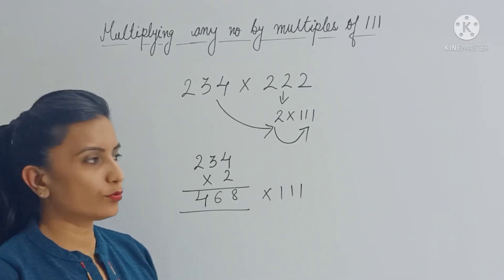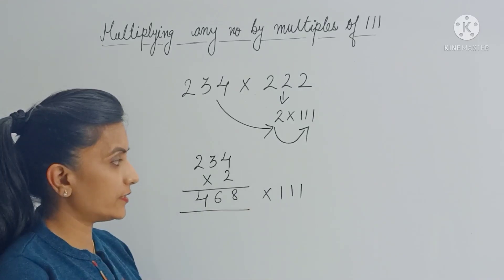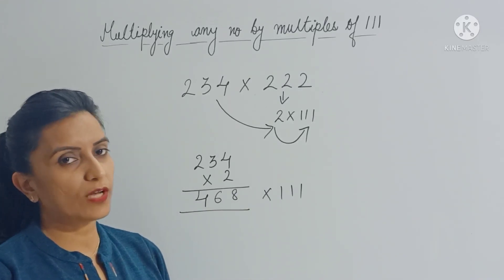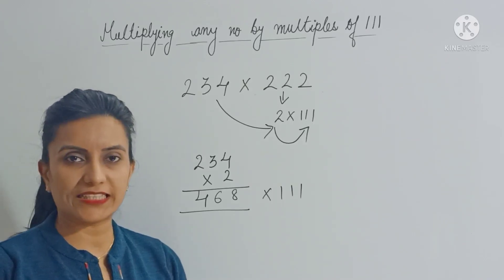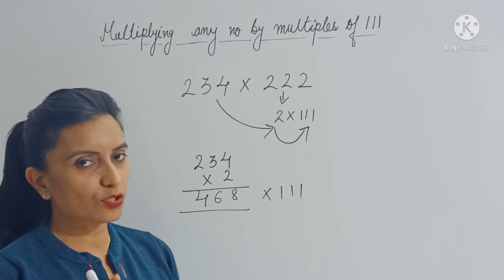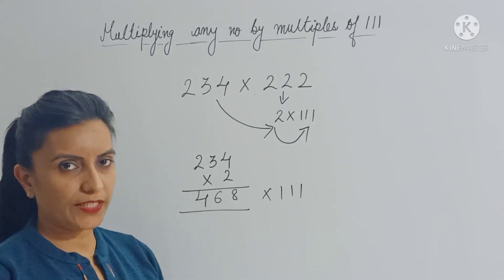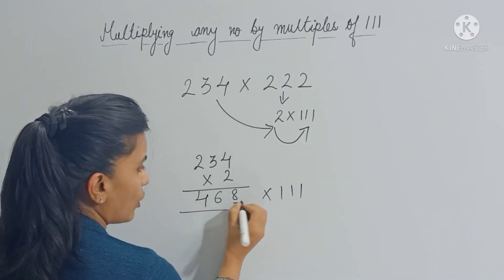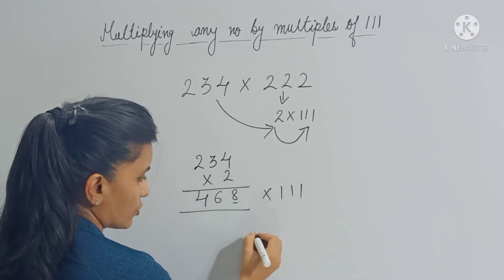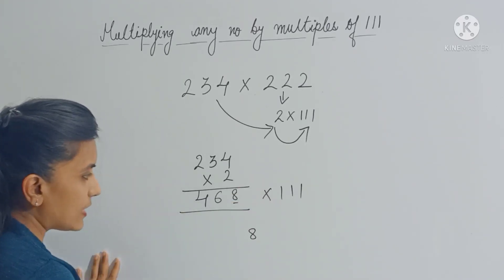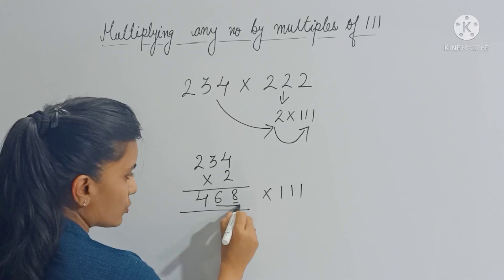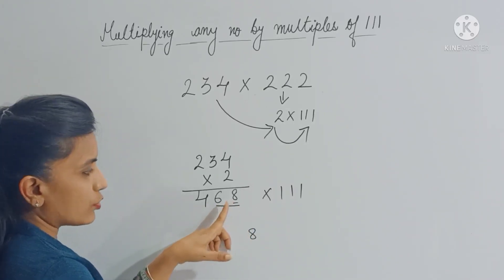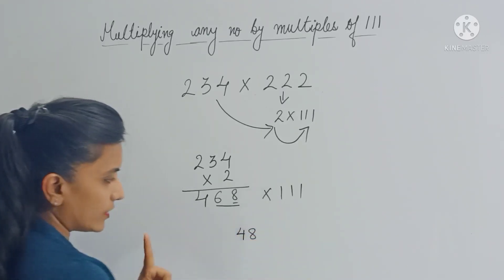I have already explained the concept and the trick. Those who have not seen that video can find the link in the description box below, so do watch that video. Here I will only explain the trick. The trick is: first, copy the last digit as it is — so you get 8. Then add these two digits: 6 and 8, which gives you 14. Write 4 here and carry forward 1.